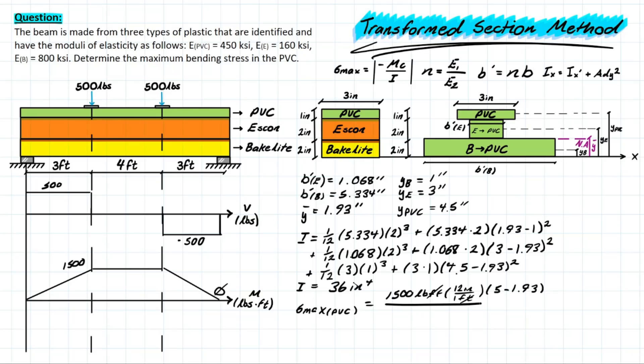And then all of that is going to be over our inertia value. So we have 36 on the bottom, inches to the power of 4. And simply solving for that, we are going to be left with a value of 1,535 pounds per inch squared. And converting that to KSI, we have 1.54 KSI.